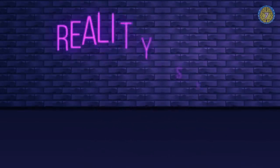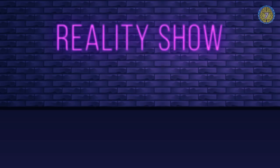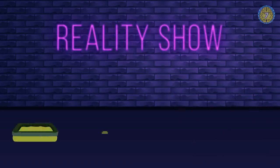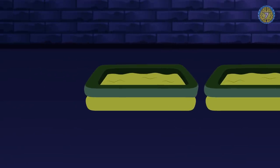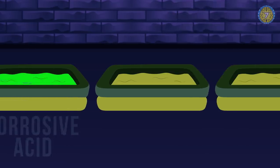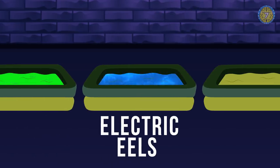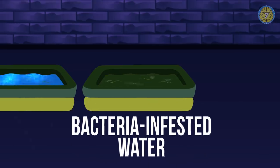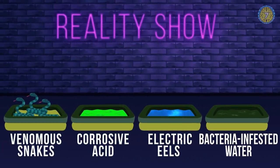You agreed to take part in a reality show. But it turned out to be a trap from a crazed lunatic. He tells you to dive into one of four tanks. The first one is swimming with venomous snakes. The second is filled with corrosive acid. Electric eels are swimming in the third one. And the fourth tank is filled with bacteria-infested water. In which tank will you have more chances to survive?